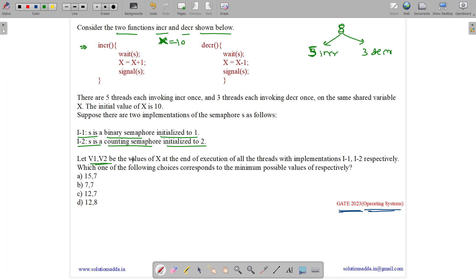Let V1 and V2 be the values of X at the end of execution of all the threads with implementation I1 and I2. So here we will get a V1 value and a V2 value after execution of all these eight threads. Which one of the following choices corresponds to the minimum possible value respectively? So we have to find the minimum V1 and minimum possible value of V2.